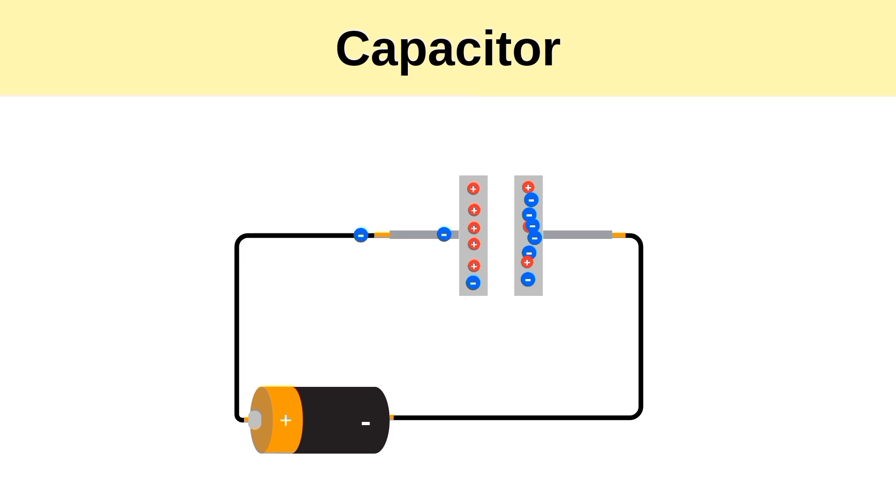Meanwhile, electrons on the other plate are repelled by the electric field of the electrons of the first plate and flow to the positive terminal of the battery. This continues until the potential difference across the capacitor equals that of the battery, at which point the flow of electrons stops and the capacitor is fully charged.